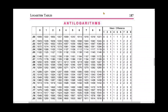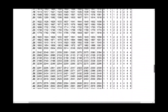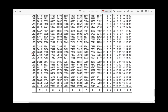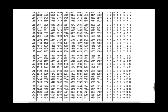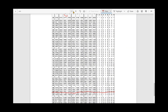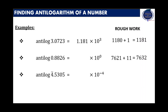Now let us consider the next number, which is 0.8826. The first two digits, 0.88, are found on the second page. We consider the entire row containing 0.88. The next significant digit is 2. The number belonging to the 0.88 row and second column is 7621. The last digit is 6, read from the mean difference column, which is equal to 11. Adding these two, we get 7632. Therefore, the anti-log of 0.8826 is 7.632 into 10 to the power of 0.